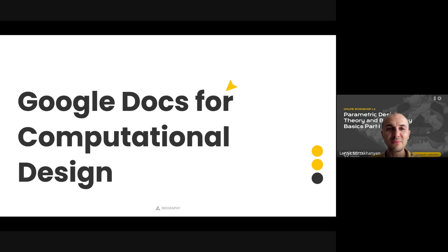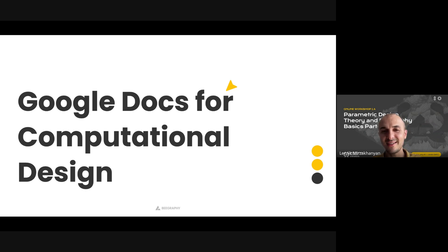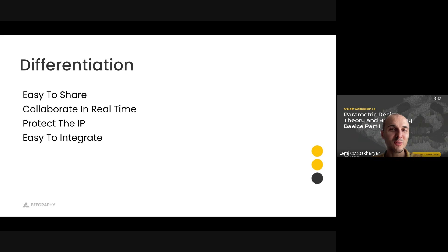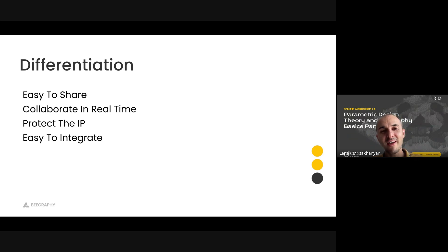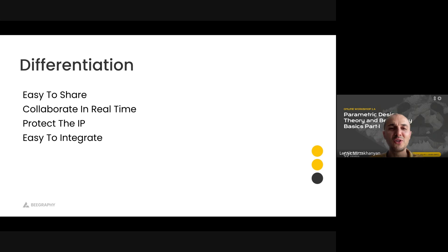Simply put, we're building something like Google Docs, Figma, Nero, or Canva, but for the computational design sphere. Our main differentiation from what exists on the market is that it's easy to share — you don't need to send files, just send the link. You can collaborate with multiple people and teams in real time. You don't have to expose your script or intellectual property when you share a parametric model. And it's online, so it's easy to integrate outside of vGraphy — like creating portfolio websites, or integrating into e-commerce or your company website.